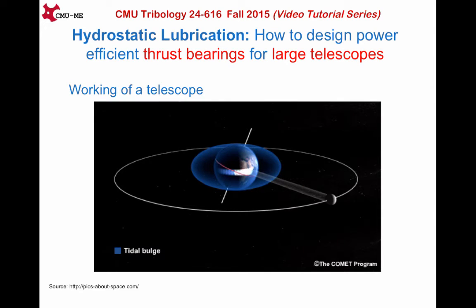The next question is: why do we need hydrostatic thrust bearings in a telescope? This is answered when we understand the working of a telescope. To keep the sighted celestial object in focus over long times requires the telescope to be smoothly rotated at angular speeds equal to that of Earth but opposite in direction. This speed is very low, of the order of 10 raised to minus 5 radian per second. Thus, a large telescope involves movement of large loads of mirrors or lenses at low speeds. Therefore, thrust bearings are required.